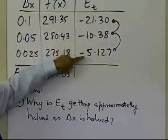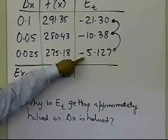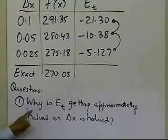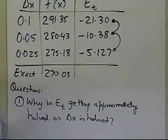Then when you are making this delta x to be half of this, which is 0.025, look at the true error, that's also getting approximately halved. It's not exactly halved, but approximately halved. So maybe you need to answer this question,